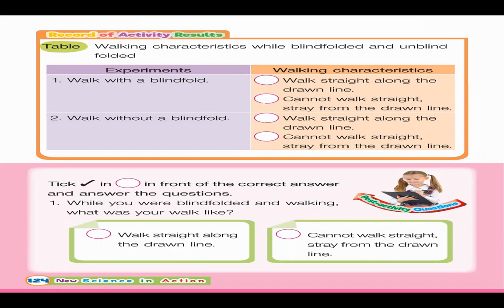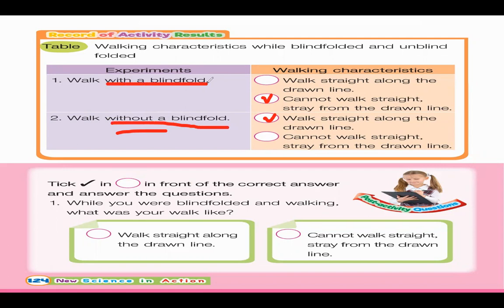You have to choose your answer. If your answer is number two — walk straight along the drawn line without a blindfold — or cannot walk straight, stay from the drawn line. Of course, you can walk straight along the drawn line because it's without a blindfold. But with a blindfold, you cannot.